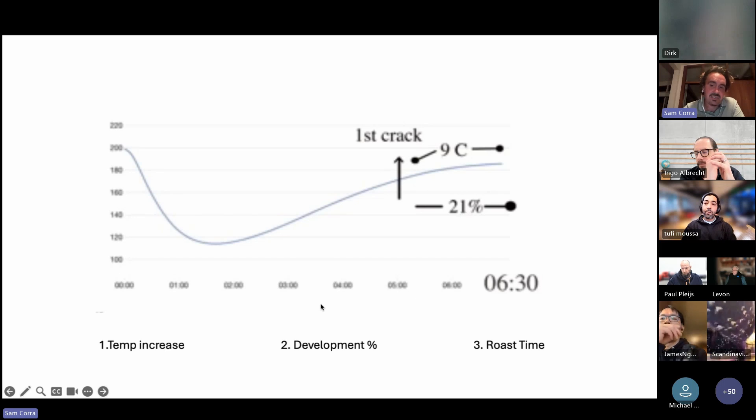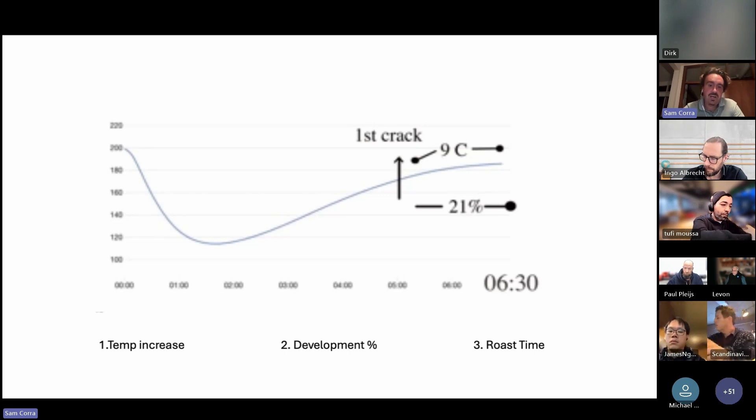If you're finding that you're struggling to match similar roast times but you really want to do them, I would suggest trialing slightly smaller batch sizes than what you may be looking for, because you'll generally have more successful control over the roast.